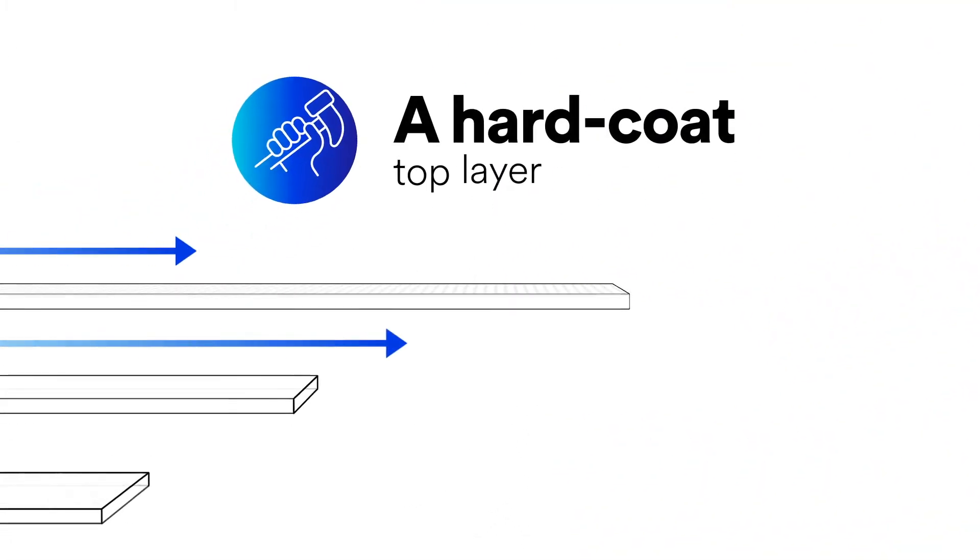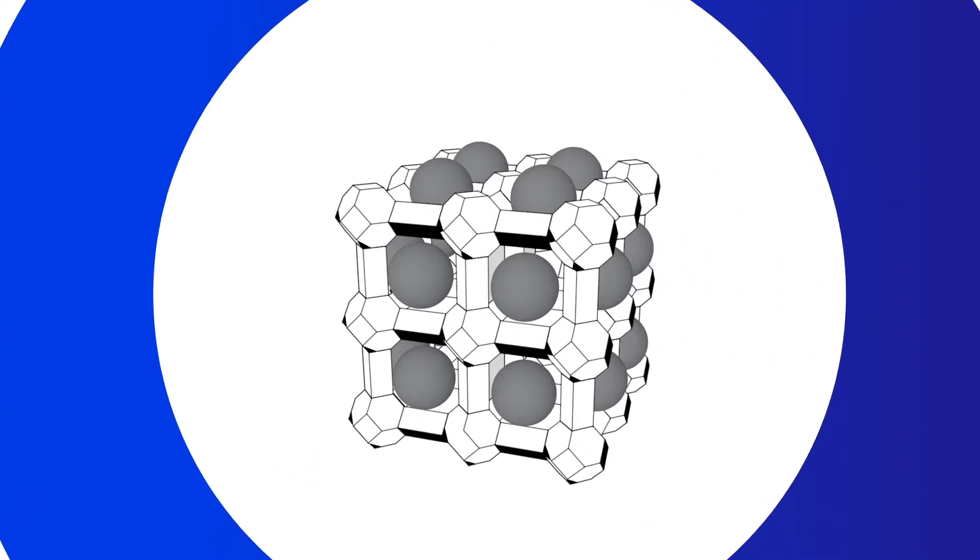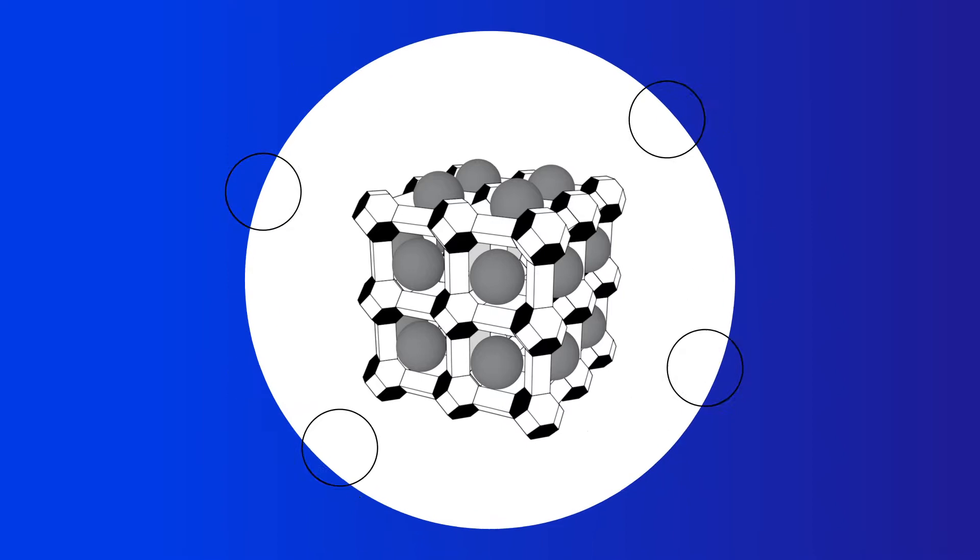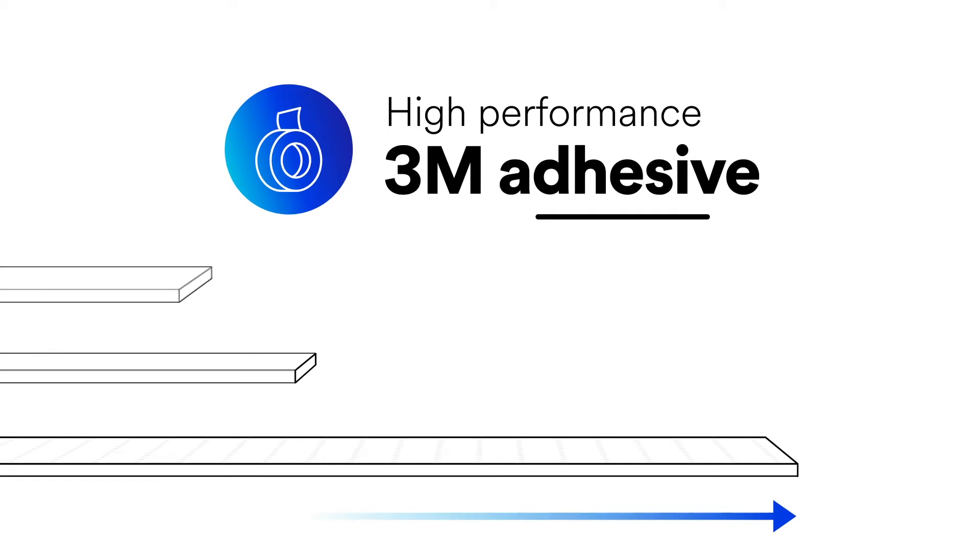The first layer is a hard coat top layer that's highly durable and infused with an EPA-registered silver ion that protects the hard coat from microbes, including bacteria, mold, and mildew. The second is high-clarity PET film, and the third is high-performance non-yellowing 3M adhesive.